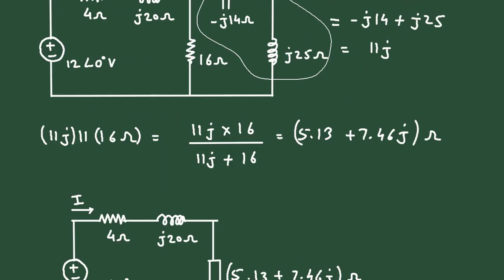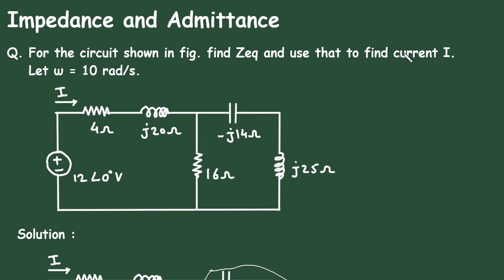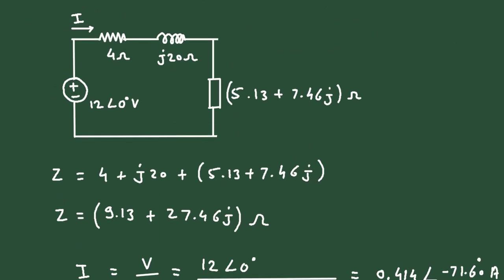Now we got the value of current i in phasor domain. So let us find the value of Zeq.